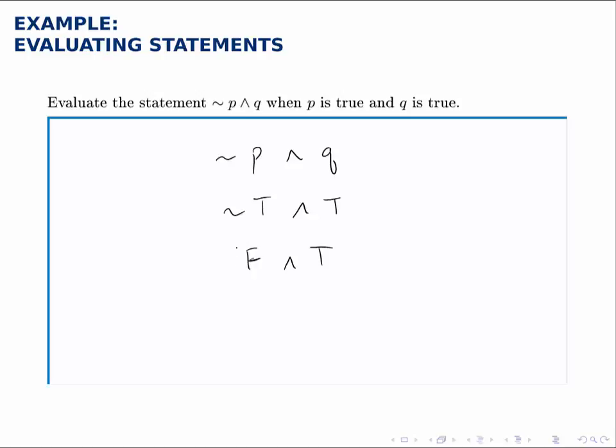In this case, one of the components is false, which is enough to make the AND compound statement be false. So false and true is the same as false.